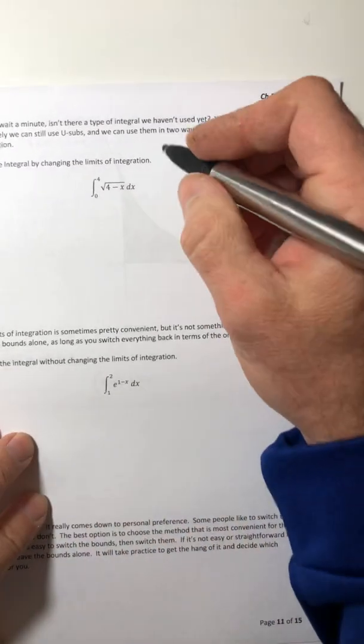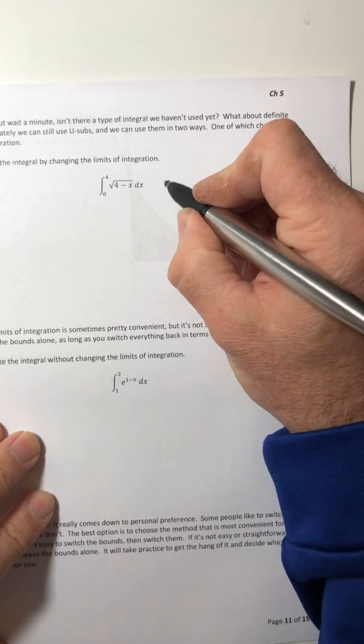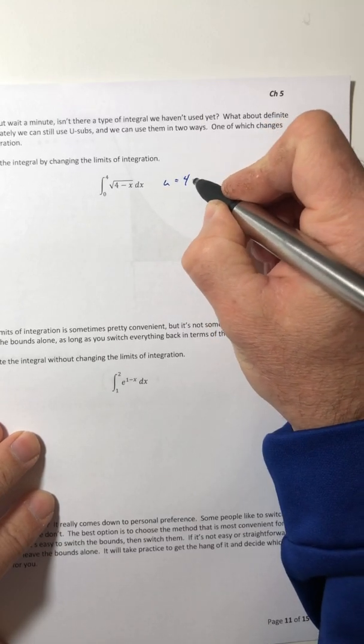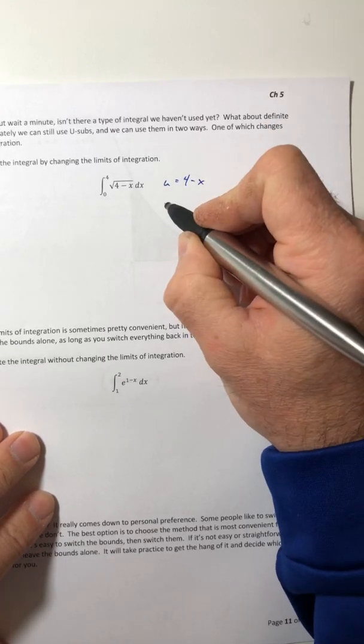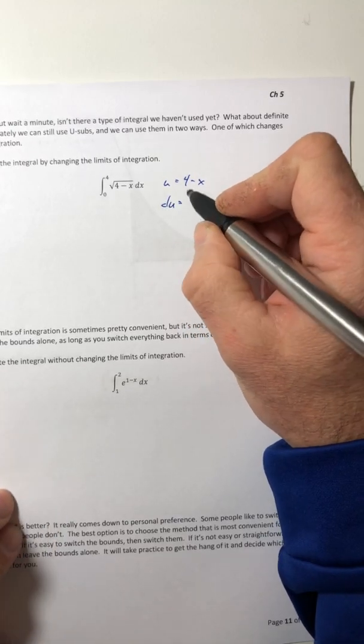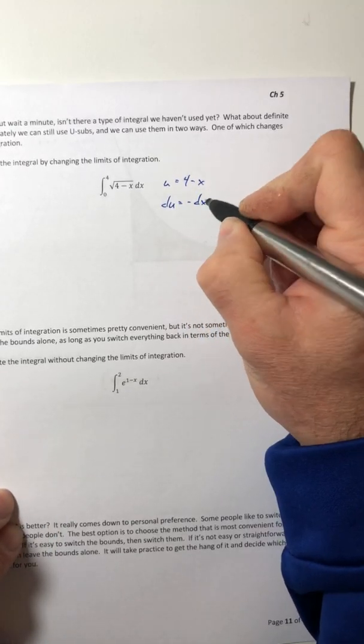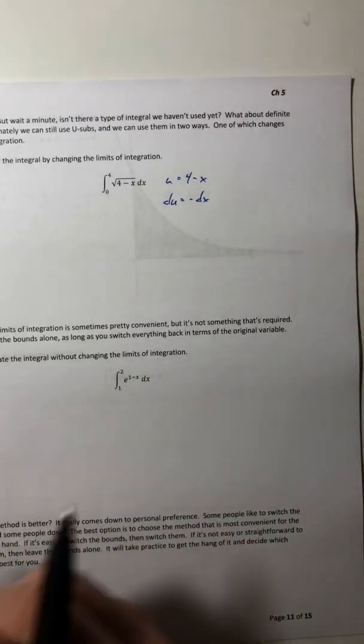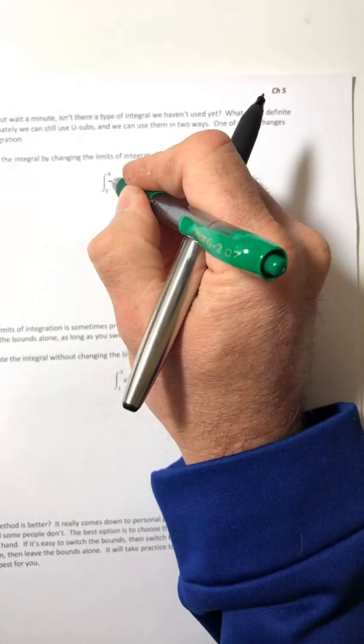So u, let's choose it so it's 4 minus x. So then the du is a negative dx. So that means I need a negative inside and I also need one outside.